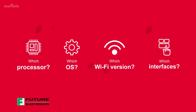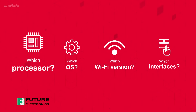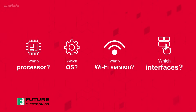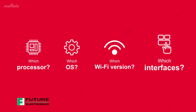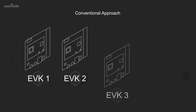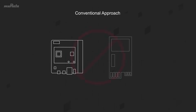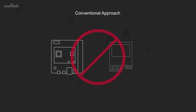Engineers developing new wireless applications are faced with the challenge of selecting the right processor, the appropriate OS, the right Wi-Fi technology, and the different system interfaces that will be needed in the application, such as SDIO, SPI, PCIe, and others. Traditionally, this meant using multiple EVKs for different processors and pairing these with various Wi-Fi cards of different interfaces. However, the cost and availability of the EVKs and adapters for the cards effectively limited the options and combinations that could be evaluated. And for each of the combinations, software customizations are required.